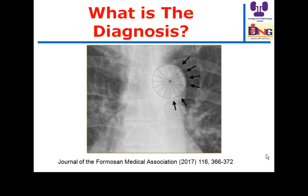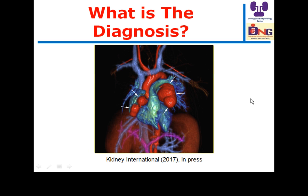This slide shows vascular calcification within the aortic arch, and this is a method to evaluate the amount of calcification by looking at the arch as 16 slices. Here, calcification is evident in 6 out of 16, so this is the scale of the vascular calcification.